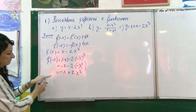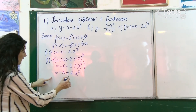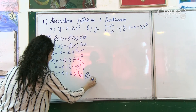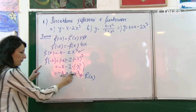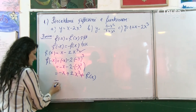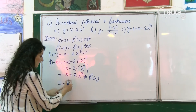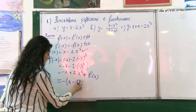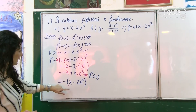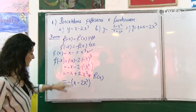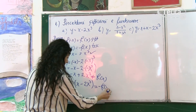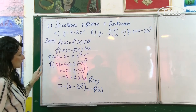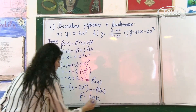Ky është vlera që kemi fituar. Tani bëjmë krahasimin: shohim vlerën që kemi fituar dhe funksionin tonë fillestar. Shikoni, kemi -x dhe +2x³. Pra ky funksion nuk është i barabartë me funksionin fillestar, nuk është identik, dhe arrijmë në përfundim që funksioni nuk është funksion qift. Të provojmë tani të nxjerrim një minus nga ky funksion dhe të shohim a mund të fitojmë një vlerë të njëjtë. Atëherë, kur nxjerrim minusin: minus e minus japin plus kemi x, minus e plus janë minus 2x³. Shohim se kjo është plotësisht identike me funksionin tonë, pra f(-x) = -f(x). Arrijmë në përfundim që funksioni plotëson kushtin dhe është funksion tek.